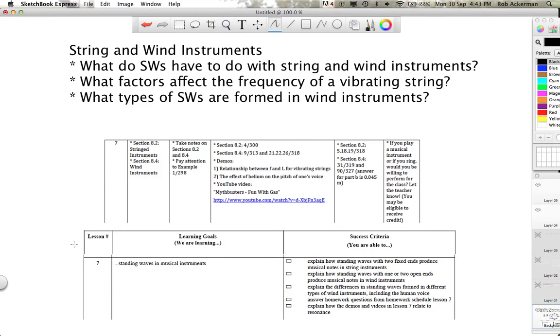One new thing I'm doing with today's lesson is incorporating what are called learning goals and success criteria. I'm going to send you a PDF with all of these in it, if I have not already done so by the time you watch this. But here's what they look like. What are we learning in Lesson 7? We're learning about standing waves and musical instruments. By the end of today's lesson, here's what you should be able to do.